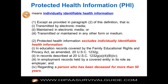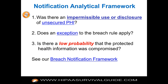If the answer is yes, the next question is: does an exception to the breach rule apply? There are three exceptions in the definition. If no exception applies, then you've got to ask: is there a low probability that the protected health information was compromised? It's no longer a risk-or-harm standard — it's low probability. The covered entity, together with its business associate under certain scenarios, has the burden of proof to prove that it's low probability. The presumption at this point is that there was a breach, and you better have a compelling argument to justify that it wasn't.